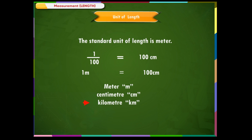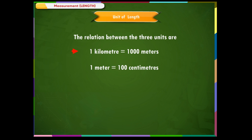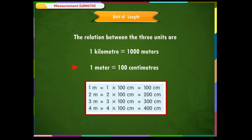1,000 meters put together make a bigger unit called a kilometer. 1 kilometer is equal to 1,000 meters. The relation between the three units: 1 kilometer is equal to 1,000 meters, and 1 meter is equal to 100 centimeters.